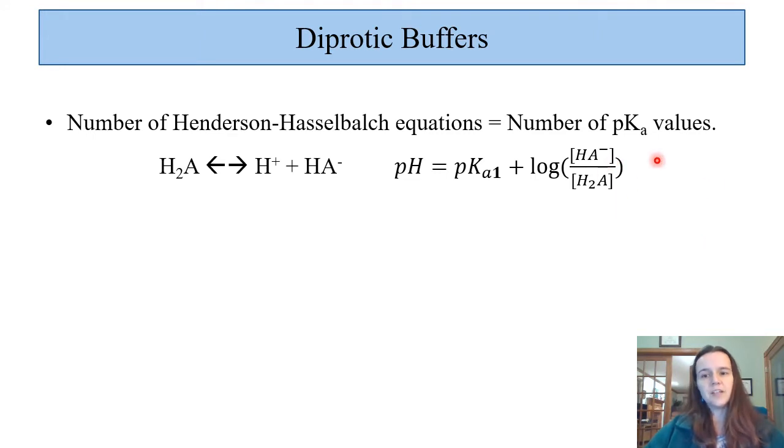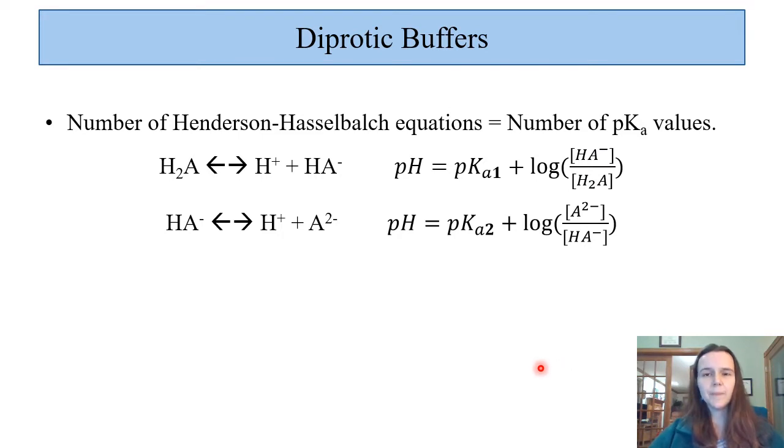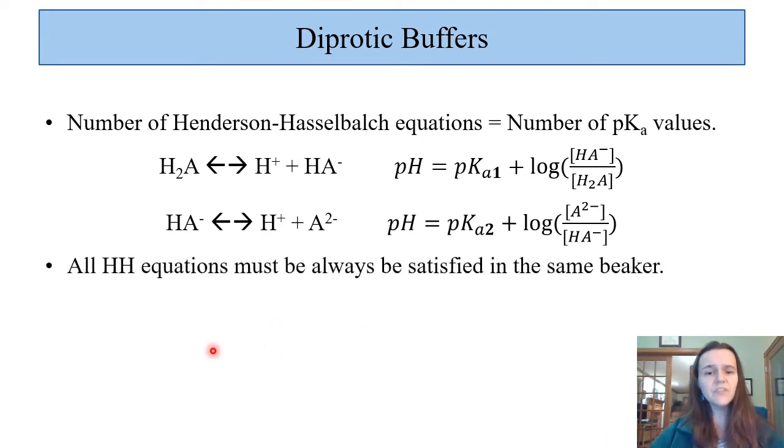All of these Henderson-Hasselbalch equations, so both of them in this case, have to be satisfied in the same beaker. So you can't have concentrations that will make one of these formulas true but the other one false. They all have to be true at the same time. That means that we can use whichever Henderson-Hasselbalch equation is convenient at any point in time. If you know H2A and HA- information, then you can use pKa1, and if you know about HA- and A2-, then you can use pKa2.